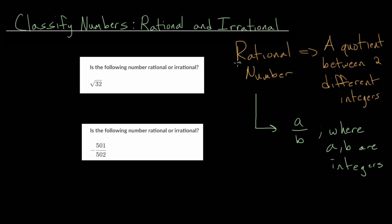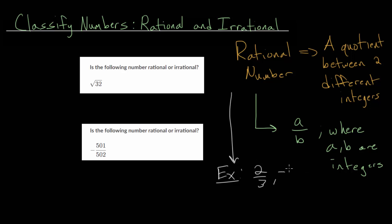The word ratio is in the word rational, and a ratio is a comparison between two numbers — ratios are often written as fractions. So, rational numbers are fraction numbers. Let's look at a couple of different examples. Something like two-thirds is a fraction between two different integers. Something like minus four over seven is another fraction between two integers.